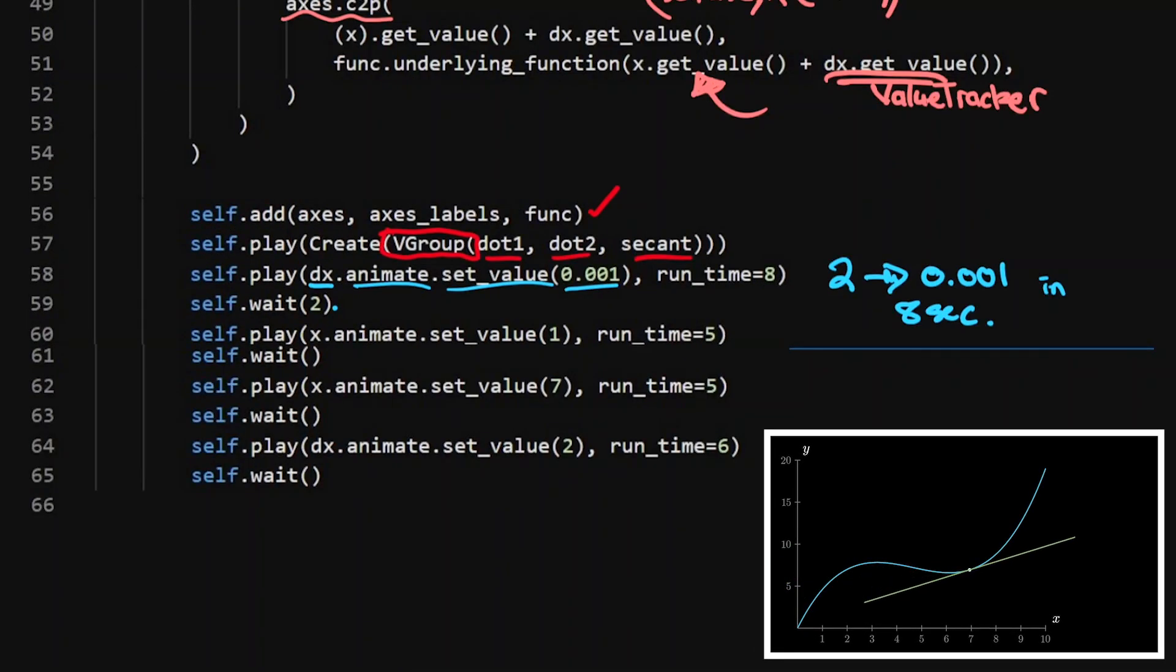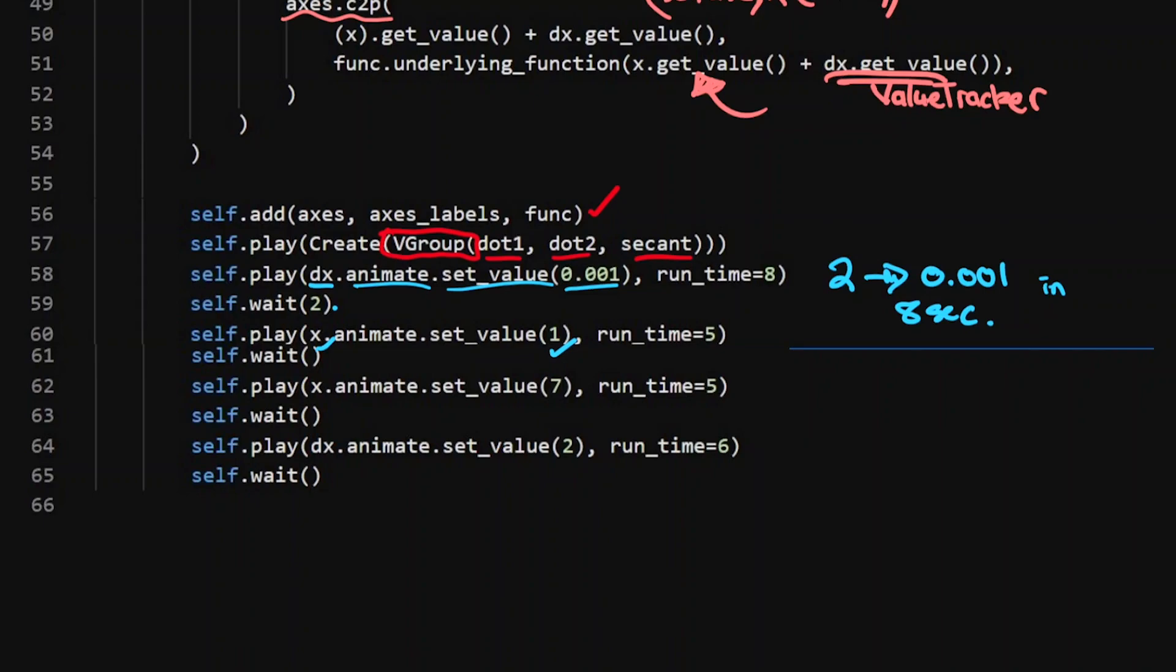So when I've got the secant and it gives the illusion to a tangent, then I can move this x value. So x, animate, set the value to one. Take five seconds.